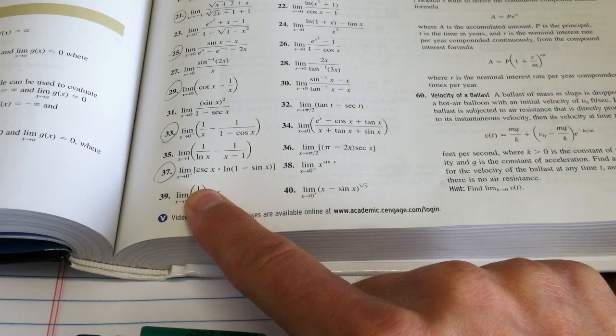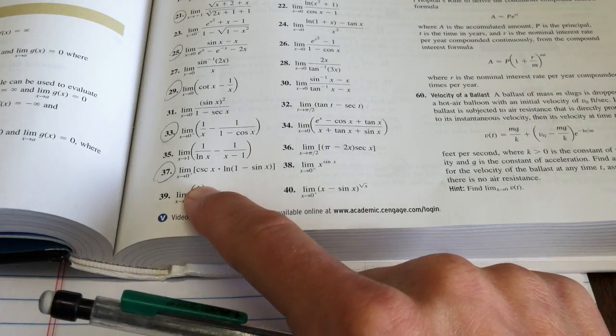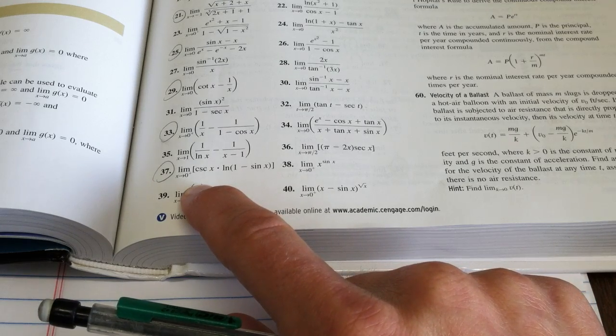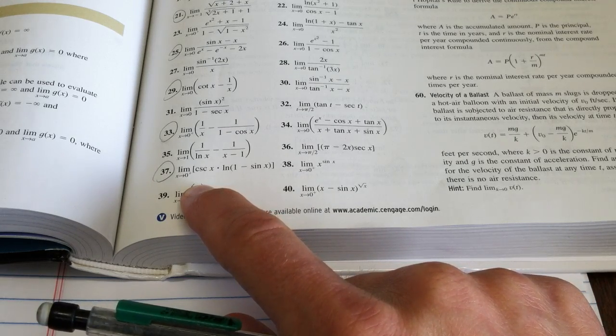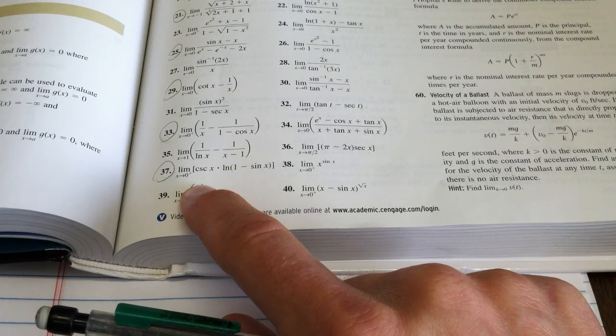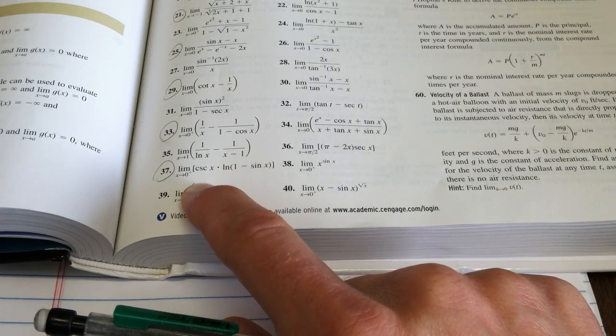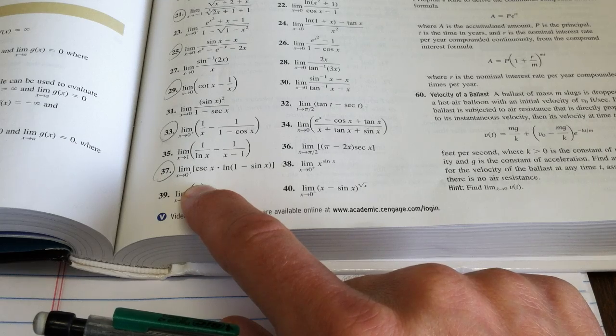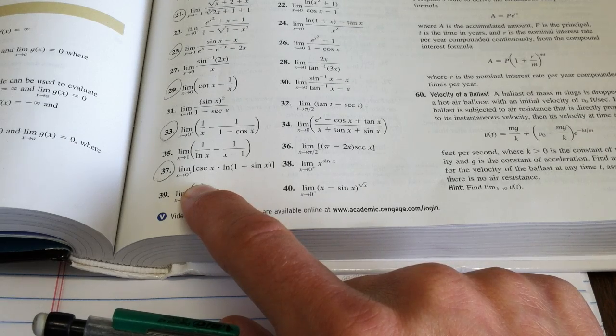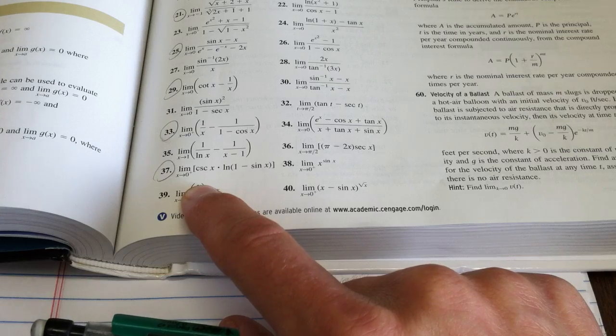We're in section 3.8, that's L'Hôpital's rule, and we're going to work on problem 37, which says the limit as x goes to 0 from the positive side of cosecant x times the natural log of quantity 1 minus sine x. Find it.